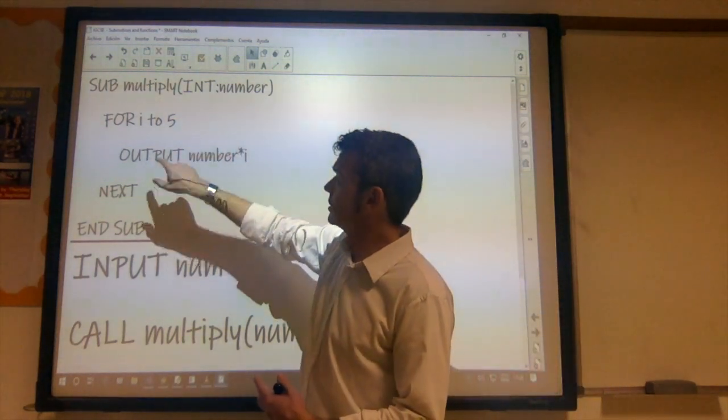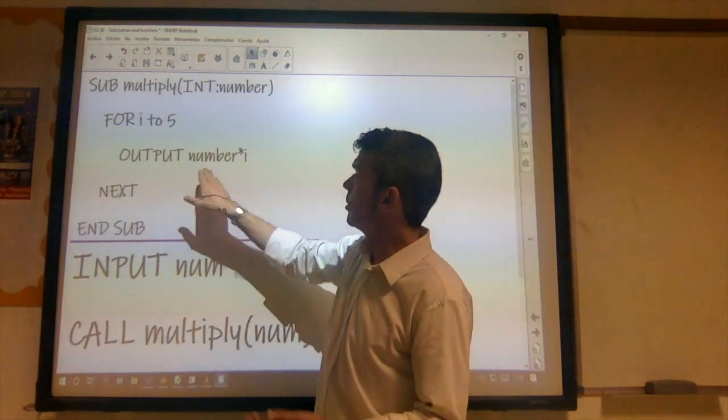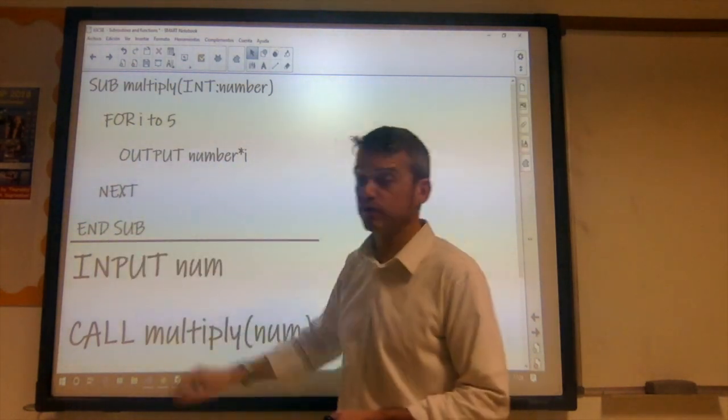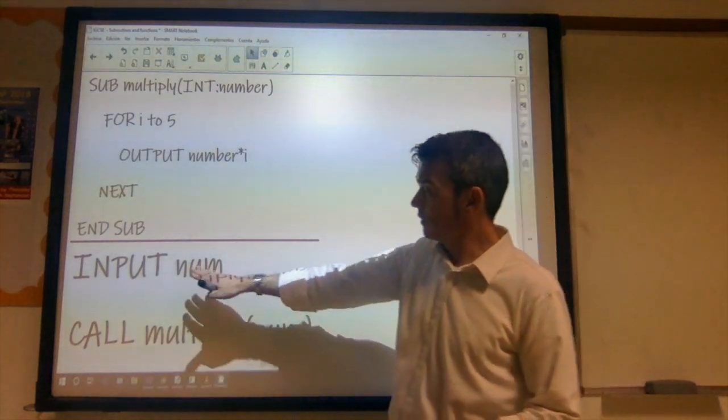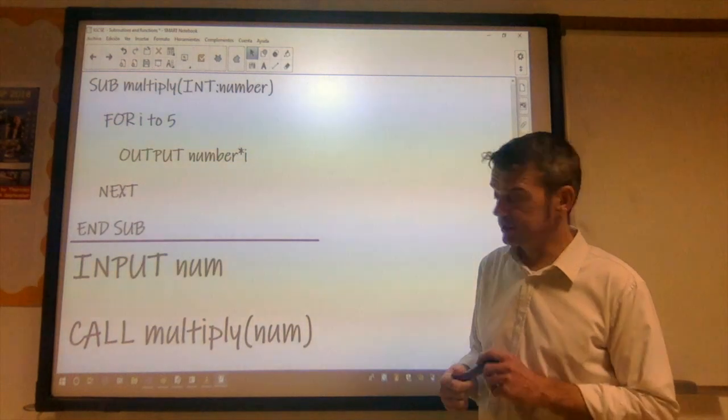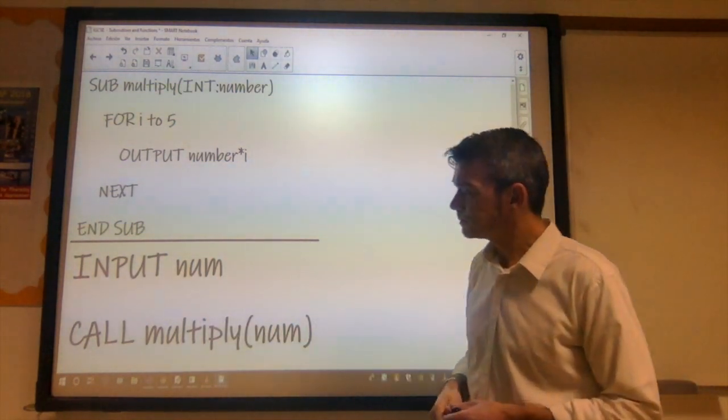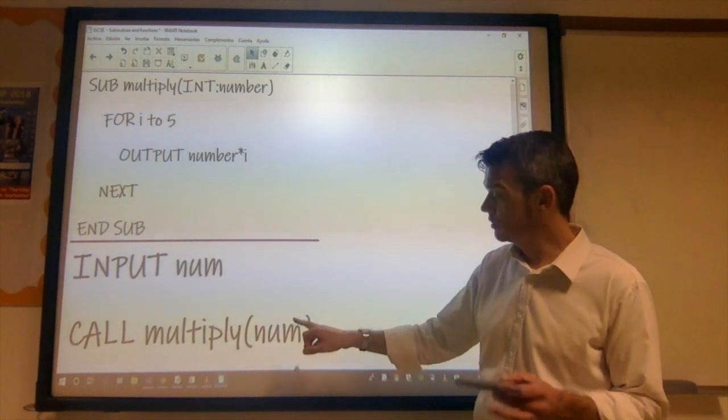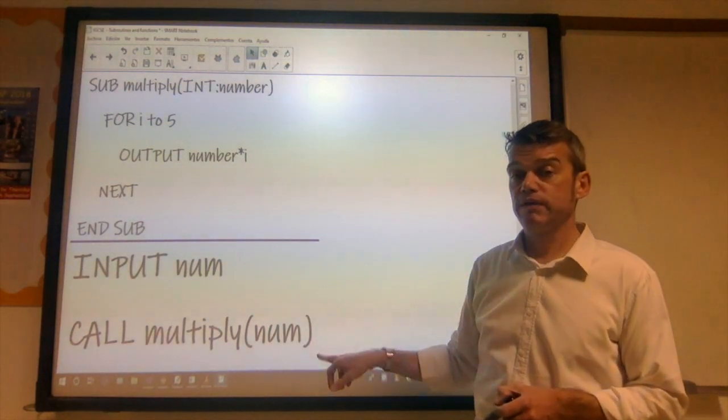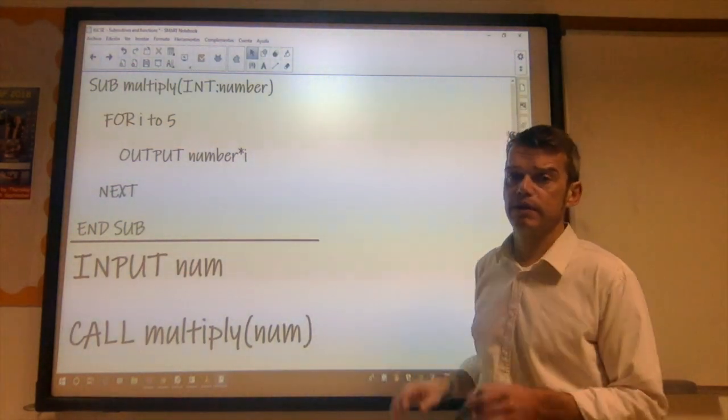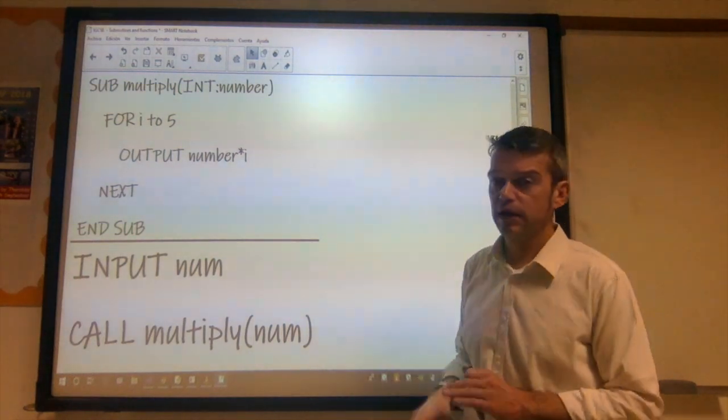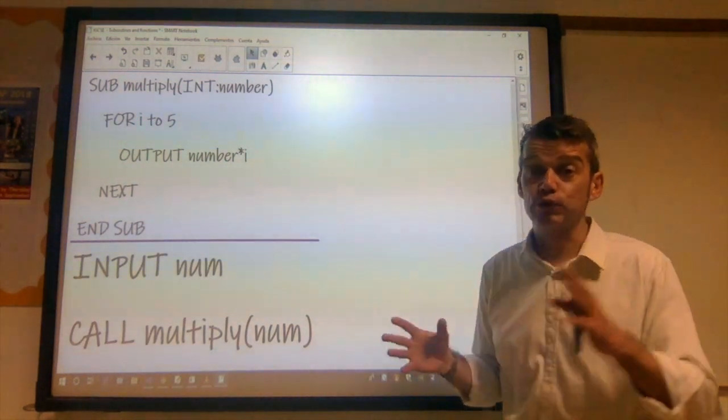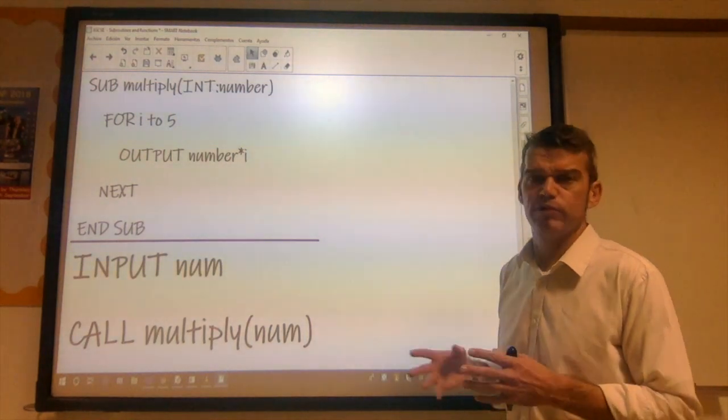So my subroutine consists of a for loop whereby I've got to output the result of a multiplication. It loops through that five times, then we get to the end of the subroutine and we go back to the main program. So here I've got my main program, my program routine. So I'm asking the user to input a number and then we have the function call with the number parameter specified. Now notice that the name doesn't necessarily coincide with the parameter that's being taken by the subroutine. Order matters more than the actual name.